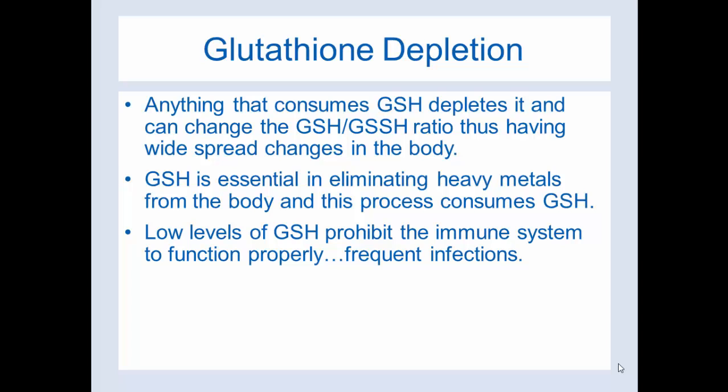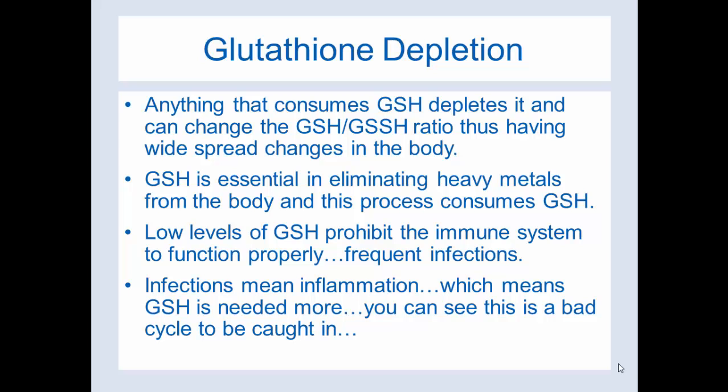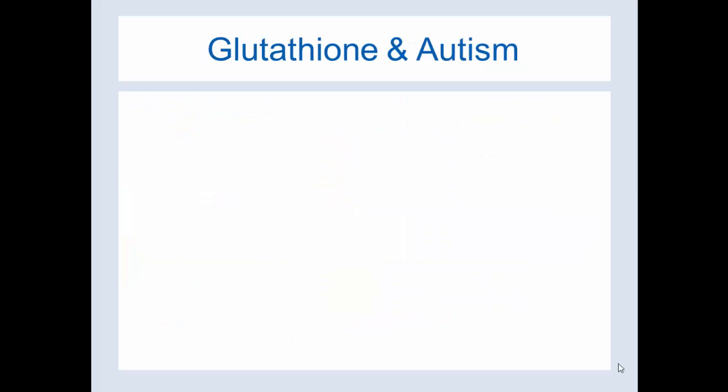Low levels of glutathione prohibit the immune system from functioning properly. If your body has a lot of heavy metals or anything else it needs to detox, you're going to start consuming your glutathione levels. And if your body is not able to sufficiently compensate for those levels being lost, you'll have overall low glutathione, which leads to frequent infections. Infections mean inflammation, which then means more GSH is needed — so you can see this bad cycle that you can get caught in, molecularly speaking.